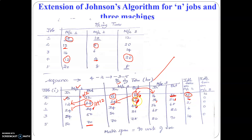Next, machine 2 is available at the end of the 32nd minute but the next job comes only at the end of the 34th minute, so 34 minus 32 is 2 minutes idle. Next, machine 2 is available at the end of the 44th minute but the next job comes only at the end of the 50th minute, so 50 minus 44 is 6. Similarly, 70 minus 56 is 14. So those are the idle times on machine 2.